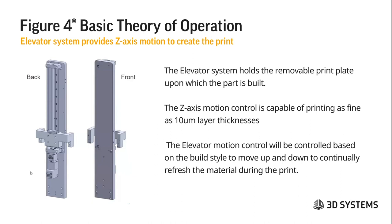The elevator system provides z-axis motion to create the print. It holds the removable print plate on which the part is built, and the z-axis motion control is capable of accurately printing as fine as 10 micron layer thicknesses. The layer thicknesses available depend on the material chosen. The elevator motion is also controlled based on the build style to move up and down to continually refresh the material during the print.